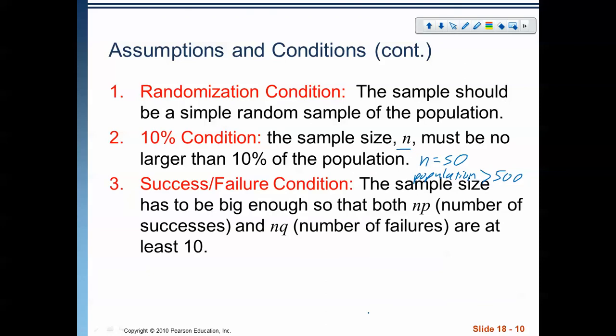The third and final condition that needs to be met is the success-failure condition. And if you remember back from the binomial distribution we did in the previous chapter, this is exactly the same. The sample size has to be big enough so that np, the number of successes, and nq, the number of failures, are at least 10.